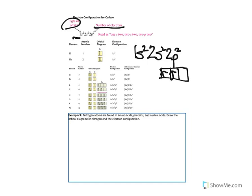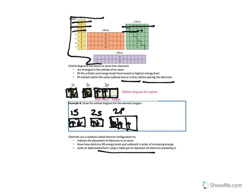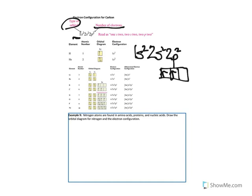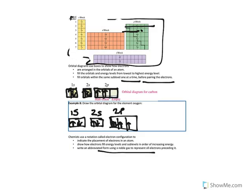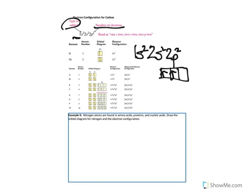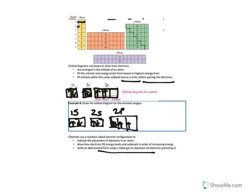You can do this for any element on the periodic table. Hydrogen has one electron — that one electron starts on level 1 in the S orbital, so it is 1s¹. Helium has two electrons; it is 1s². Lithium has three electrons: 1s², 2s¹. Beryllium has four electrons — two in the 1s, two in the 2s — so its electron configuration is 1s², 2s².